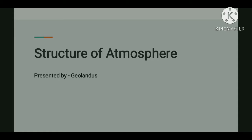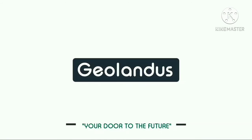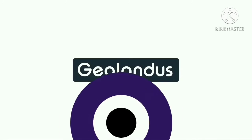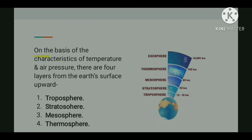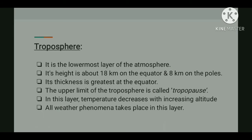Hello everyone. Today in this video I'm going to discuss the structure of the atmosphere. On the basis of characteristics of temperature, the atmosphere is broadly divided into four different layers: troposphere, stratosphere, mesosphere, and thermosphere. The first one is troposphere — it is the lowermost layer of the atmosphere where all kinds of weather changes take place.